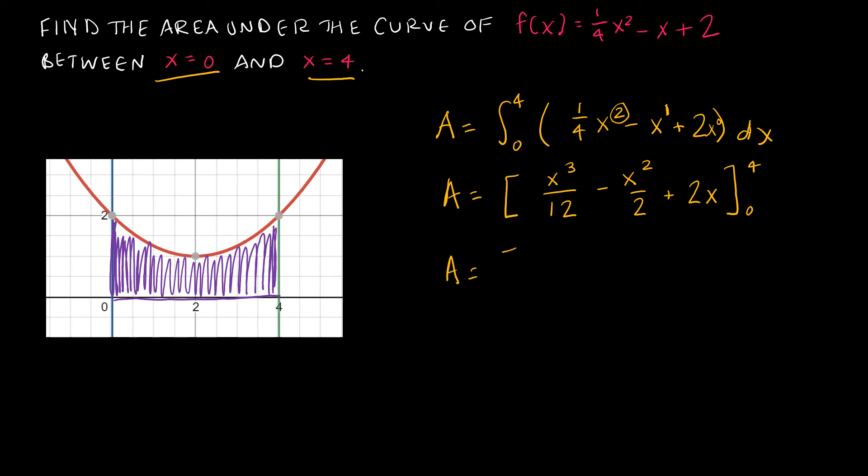So now to find the area, remember I start with 4. I plug it in to get 4³, which is 64 over 12, minus 4², which is 16 over 2, and then plus 2 times 4, which is 8. If I plug in 0, just as we had on the last example, I'll get 0 and 0 and 0, so I'm just going to put minus 0. And I don't need those brackets anymore since I've already plugged in the limits of integration.